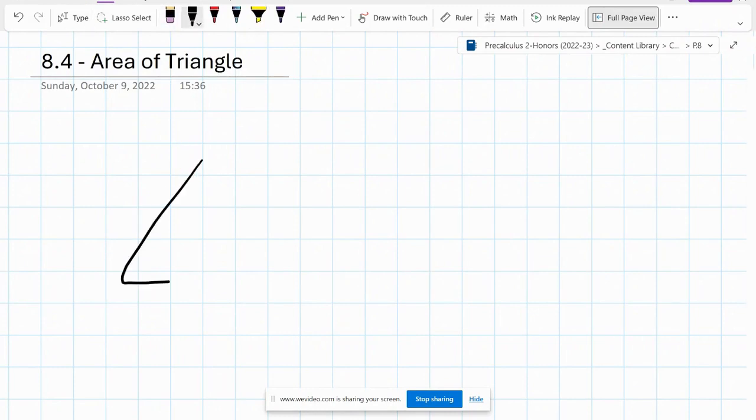We're going to draw just our basic triangle with side lengths of little a, little b, little c, and with their capital letter opposite angles, and we're also going to draw a height down on the triangle, which we're going to label h.